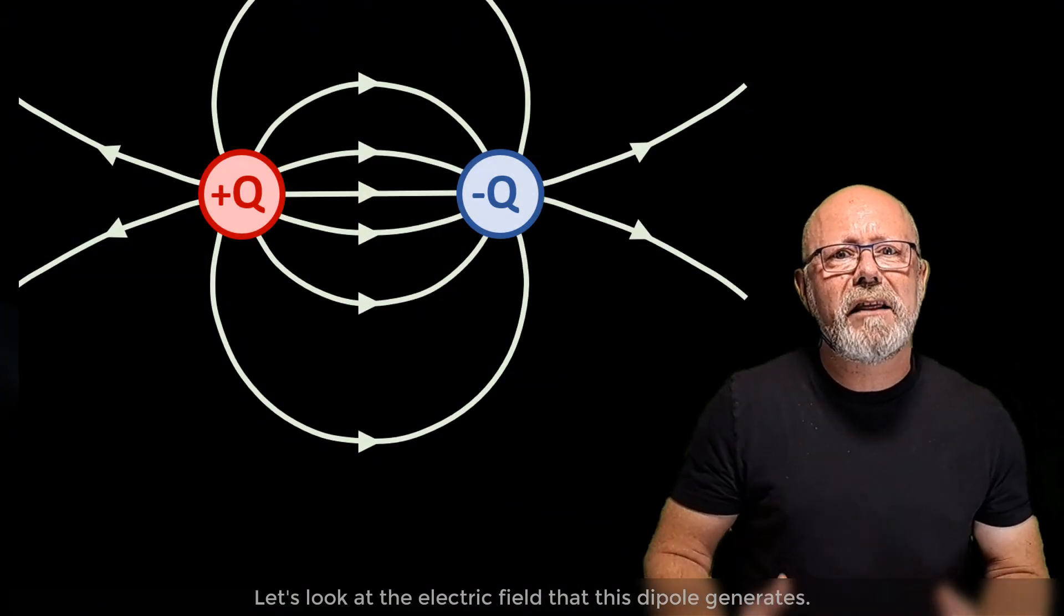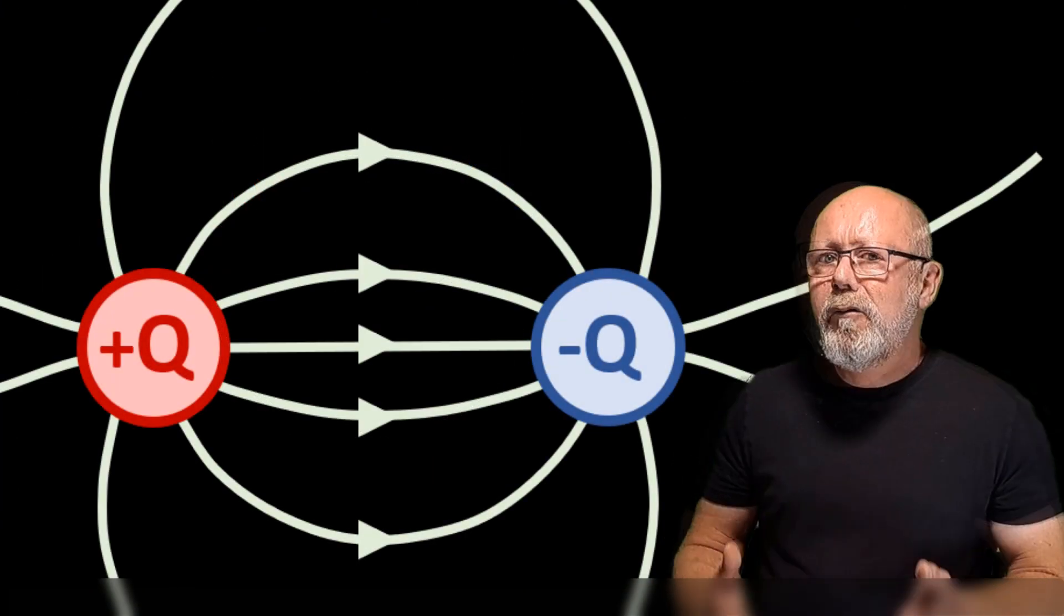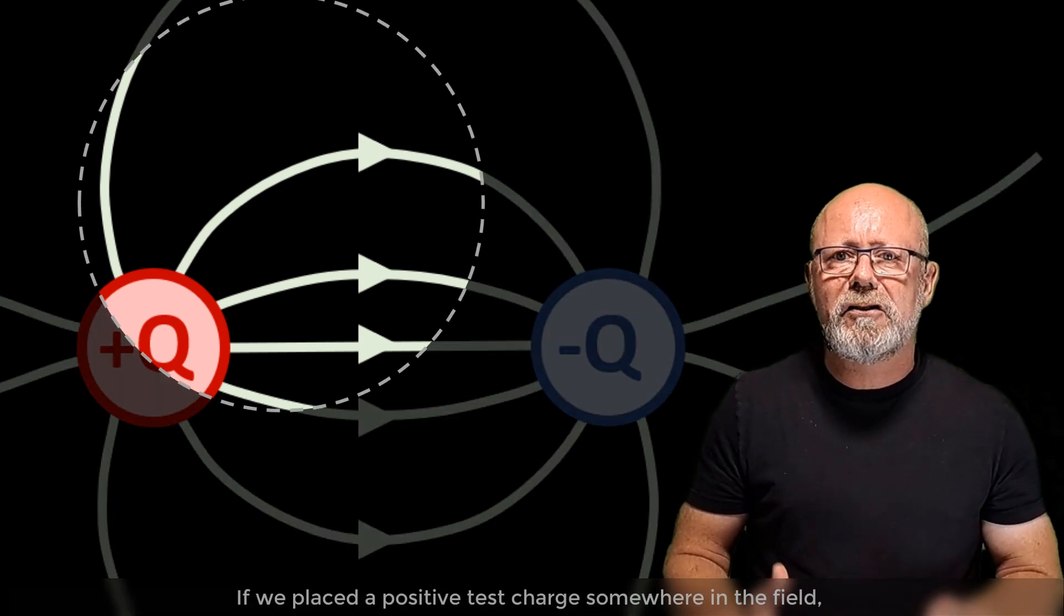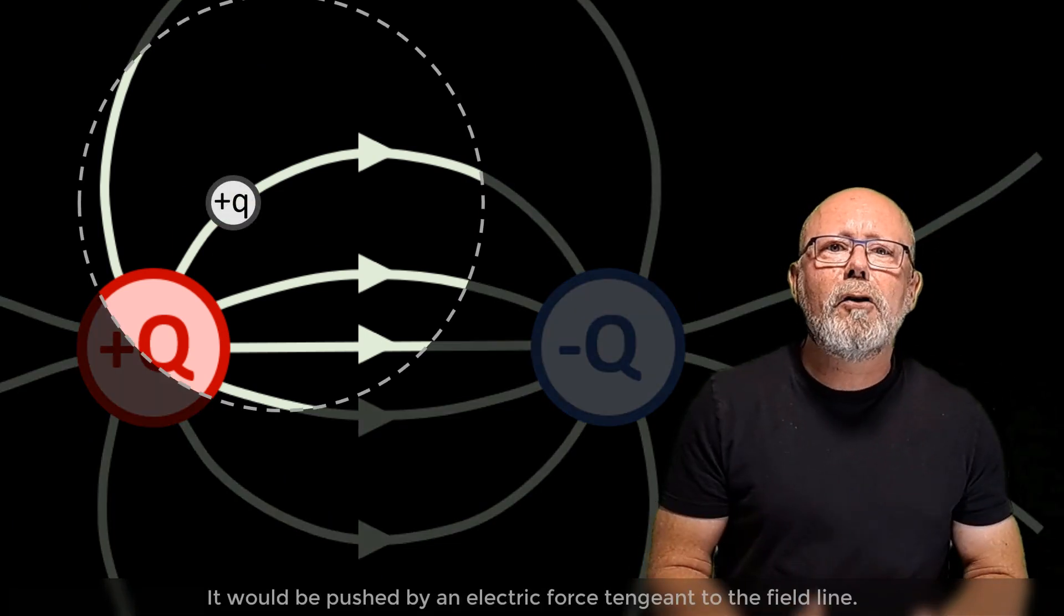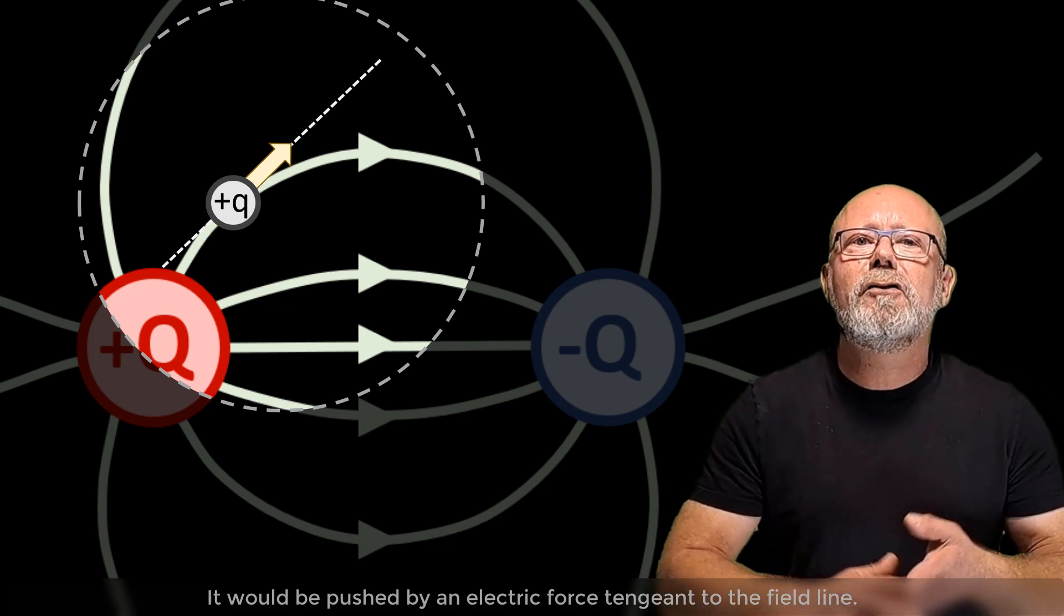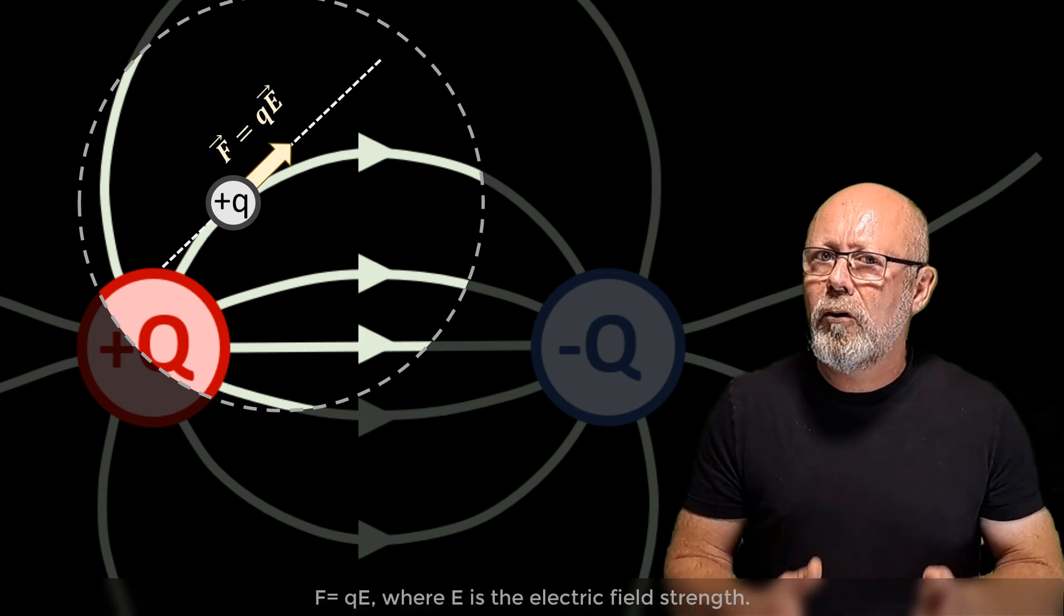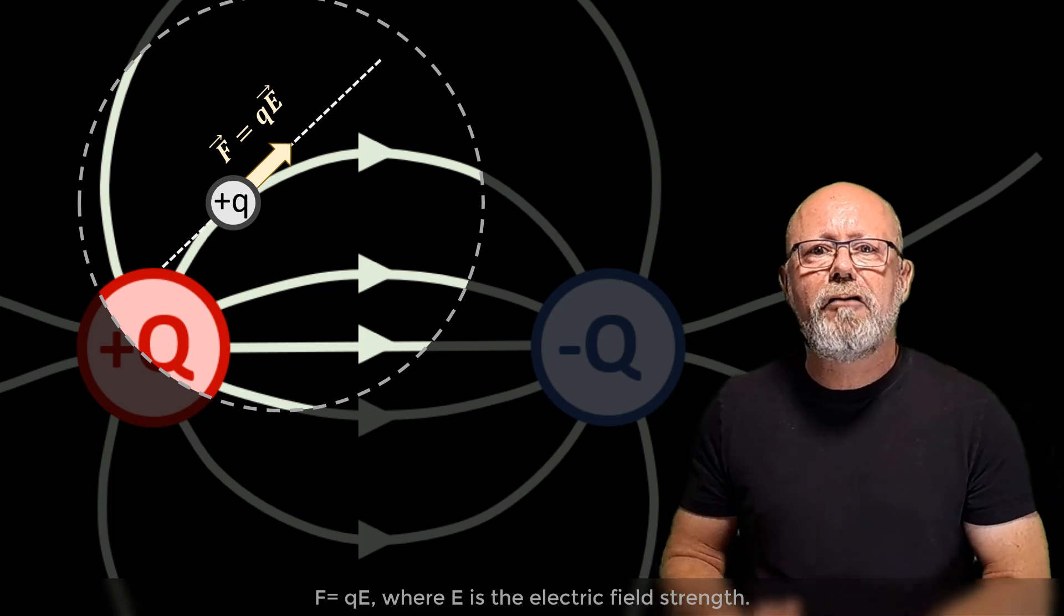Let's look at the electric field that this dipole generates. If we placed a positive test charge somewhere in the field, it would be pushed by an electric force tangent to the field lines, f equals qe, where e is the electric field strength.